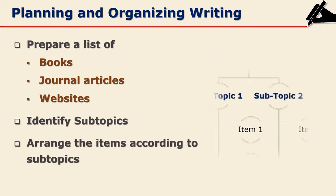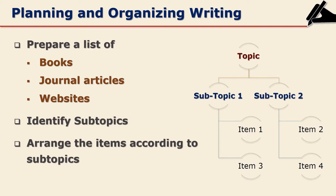What we are doing here is: initially we prepare a list of books, journal articles, and websites — this is called the working bibliography. Then we identify subtopics of the main topic or area, arrange all the items under those subtopics, and then decide on the arrangement of your chapter on literature review.